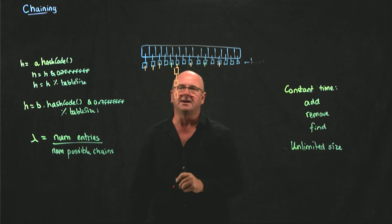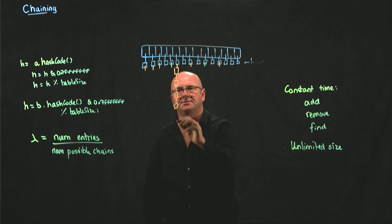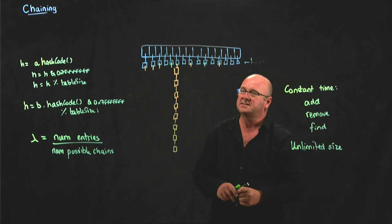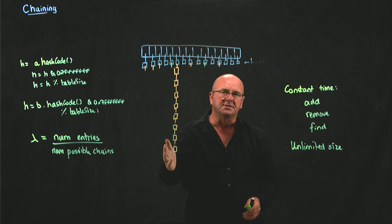I add something, I get the same potential chain. I add something, same potential chain again, and again. When I'm adding things, I've now converted my hash, basically, into just a standard linked list.